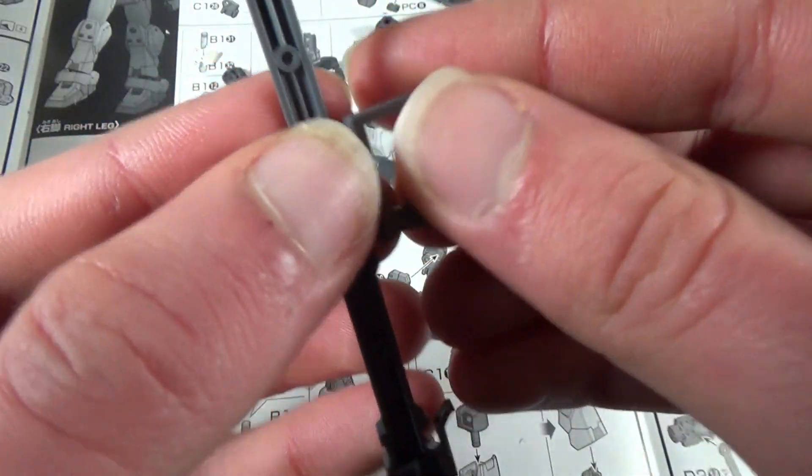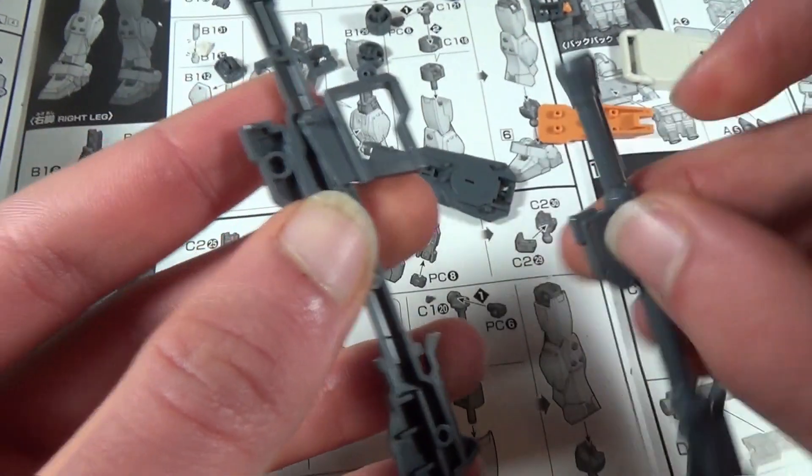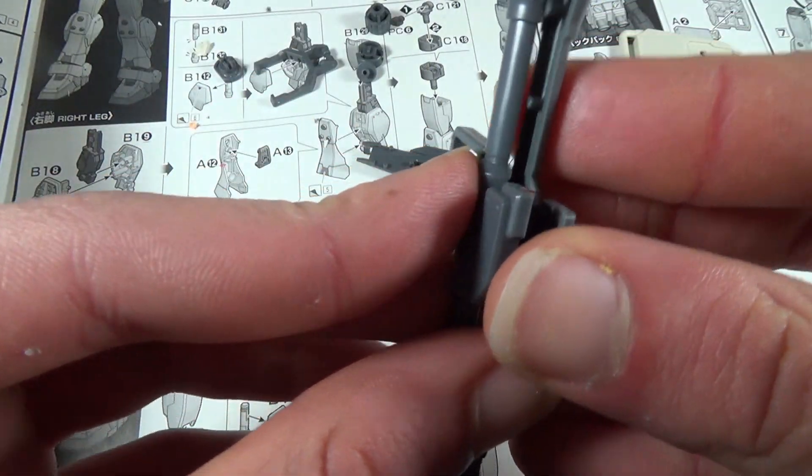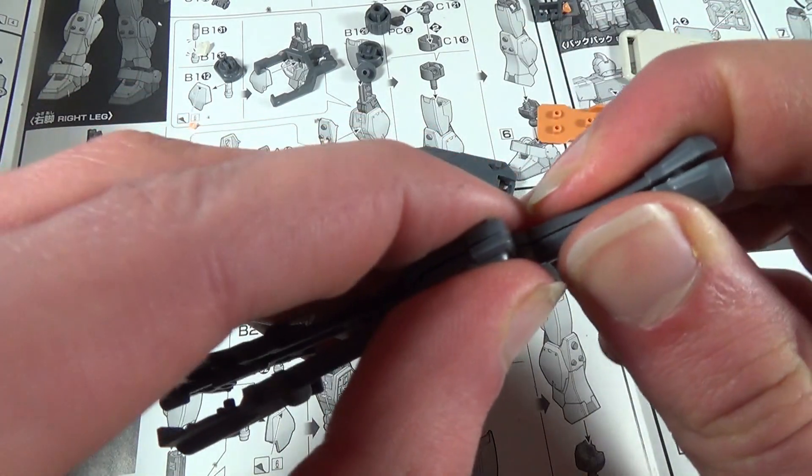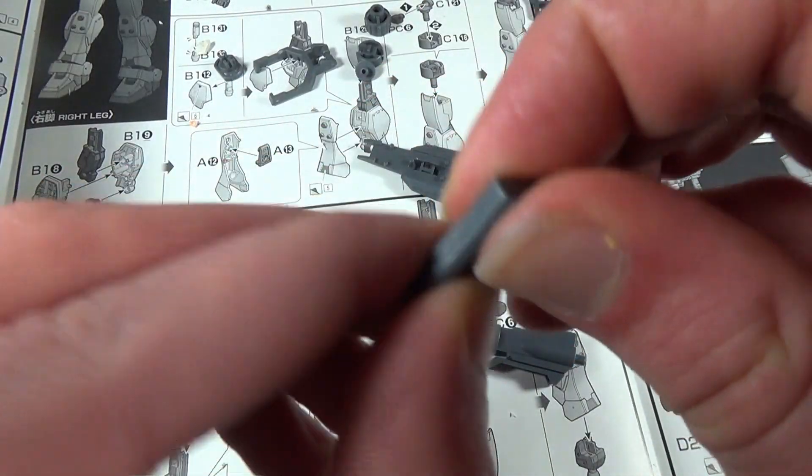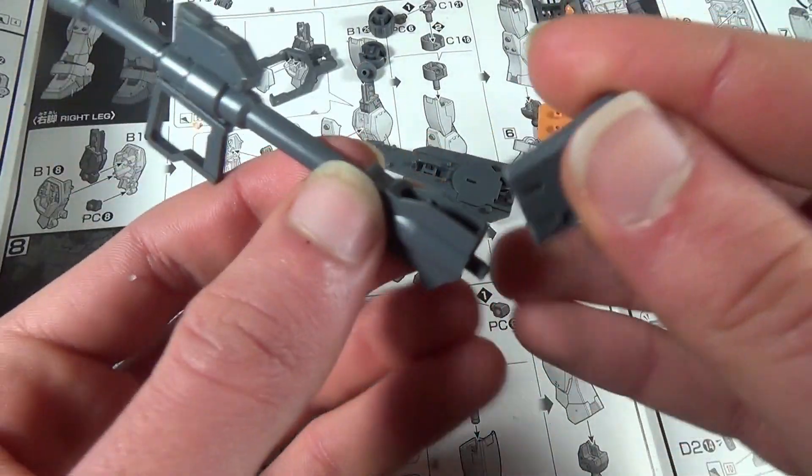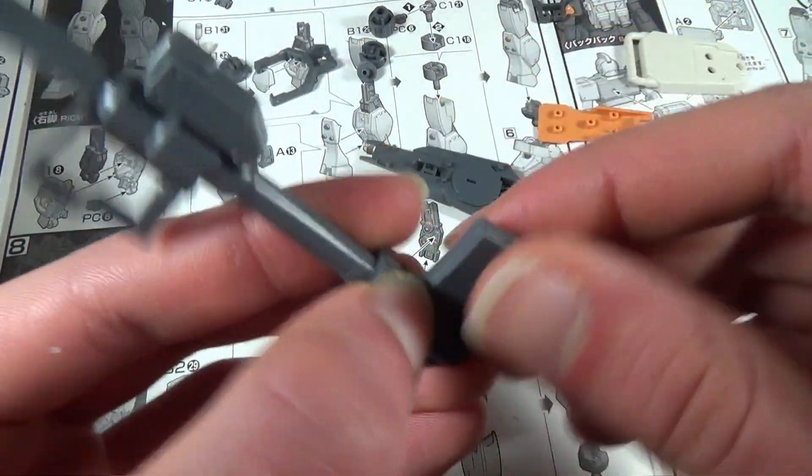And the rocket launcher is built very similarly. You pop the handle in here. You pop the other half of the launcher onto the other one, just like with the other two weapons. Now you can just take these two pieces, clip them together to make the ammo magazine, and then drop that right down in here.